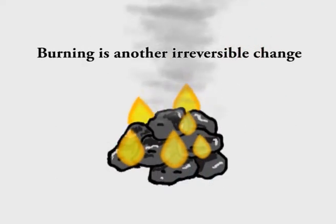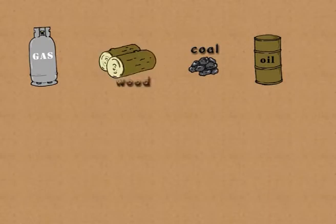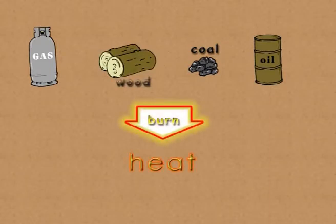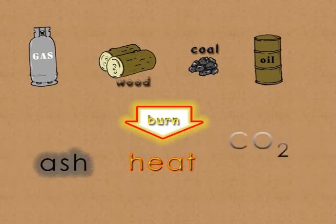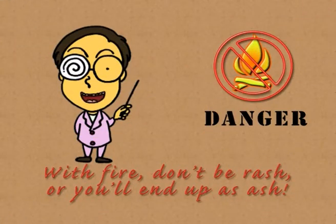Burning is yet another irreversible change. We burn materials such as oil, gas, coal and wood to get heat. But at the same time, new materials such as ash, carbon dioxide and other potentially harmful gases are produced. So we must be careful when we burn things, because once the burning starts, it's difficult to go back the other way.